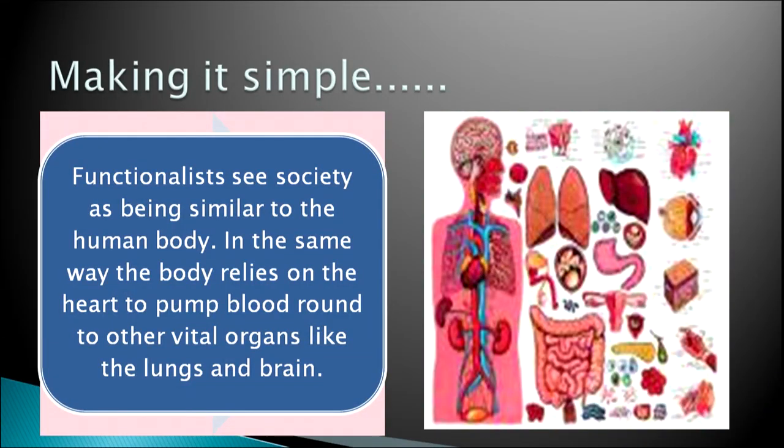The functionalist sees society as being similar to the human body. In the same way the body relies on the heart to pump blood to vital organs like lungs and brain, all the parts of the body are interdependent — heart, kidneys, and so on. In the same way, the various institutions of society work together and serve the society together for the solidarity of the society.